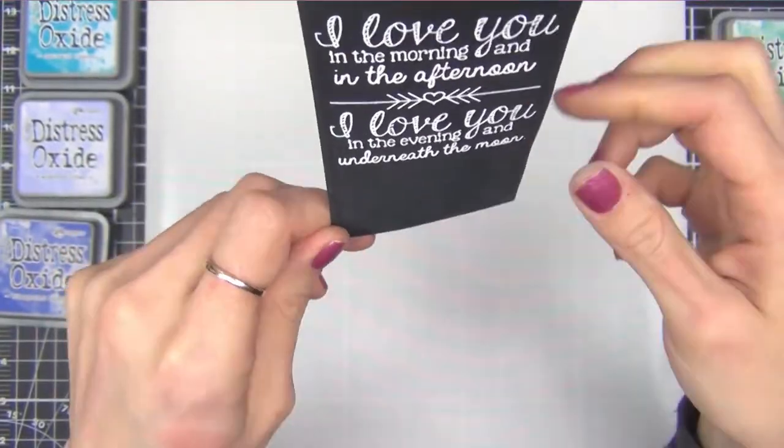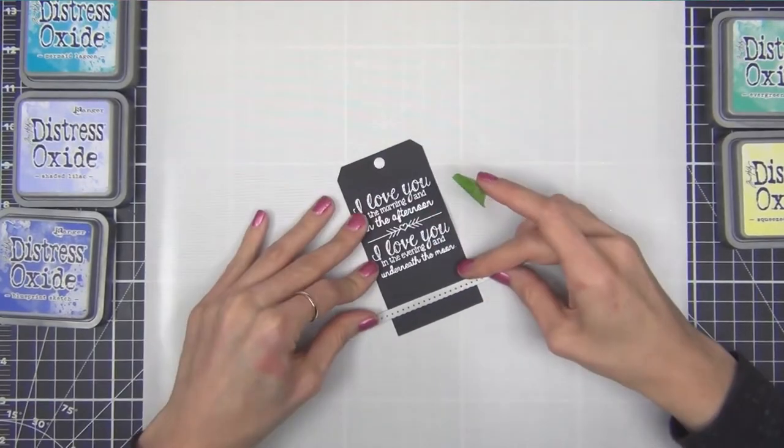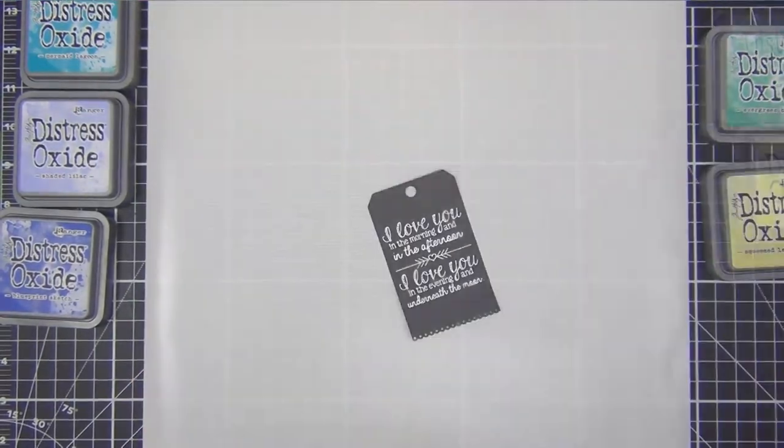Once I heat set that I go ahead and take a lacy border die from Lawn Fawn and use it to make my tag a little bit shorter.